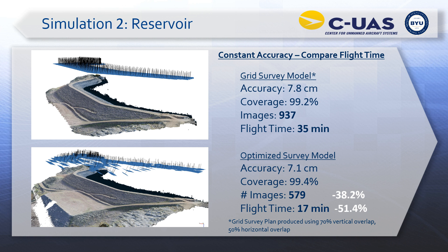For the 500-meter reservoir dam, instead of holding the number of photos constant, we allowed the optimizer to reduce the number of photos as long as it achieved the required accuracy. The grid survey accuracy was 7.8 centimeters, so we targeted about 7 to 8 centimeters. The optimizer determined far fewer images were needed — instead of 937, only 579 — leading to a reduction in flight time from 35 minutes to 17 minutes, a 51% improvement in flight time.